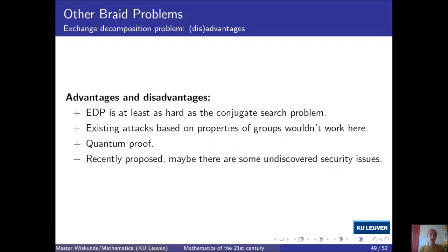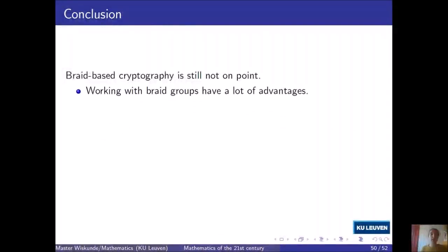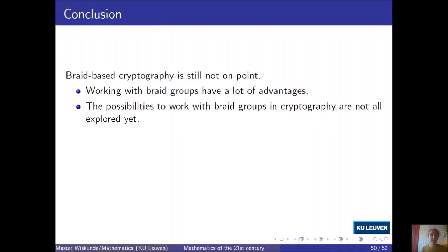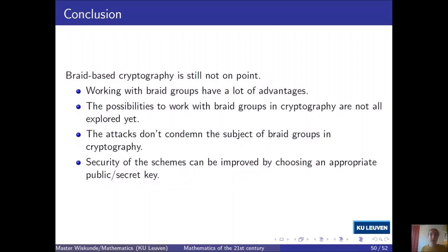A possible negative remark is that the scheme based on the exchange decomposition problem is brand new and may have undiscovered security issues. The overall conclusion is that braid groups have a lot of advantages due to their intuitive and appealing character. The possibilities to work with braid groups in cryptography are not all explored yet, like the safety of the alternative to the conjugator search problem — the exchange decomposition problem. We've also seen that attacks exist against the proposed schemes, but those attacks don't condemn the subject, since nothing has been proved about the size of the upper summit set. More investigation on key generation can lead to more secure cryptographic schemes. Thanks for listening to our presentation.